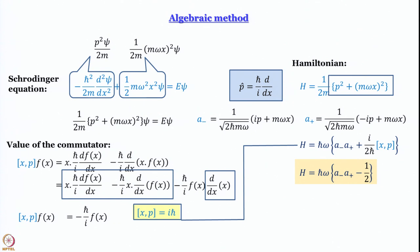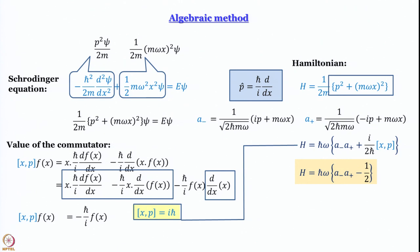We have expressed the Hamiltonian in terms of ladder operators in a rather simple form. Your homework is to work out a⁺a⁻ and show the relationship between the Hamiltonian and a⁺a⁻. You will find a very similar expression — instead of minus 1/2 you get plus 1/2: H = ℏω·(a⁺a⁻ + 1/2).